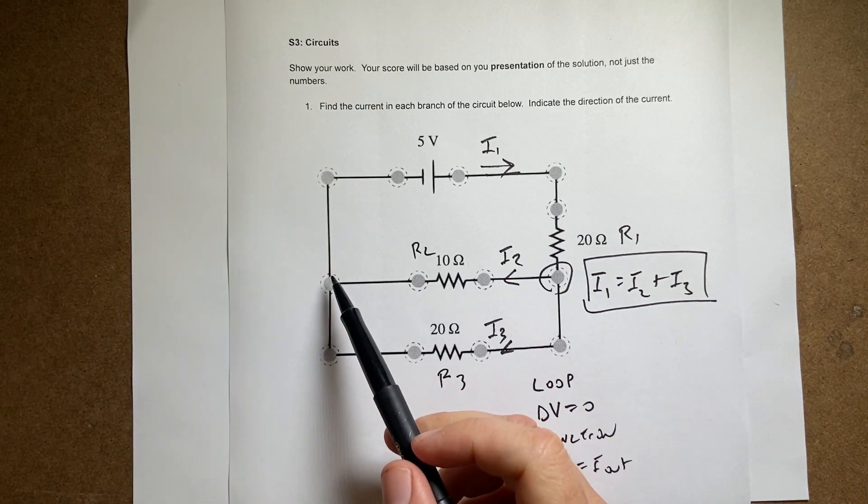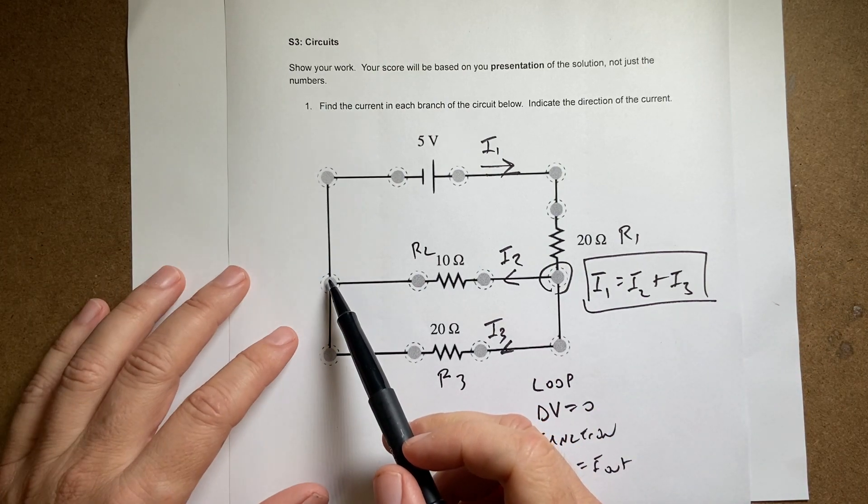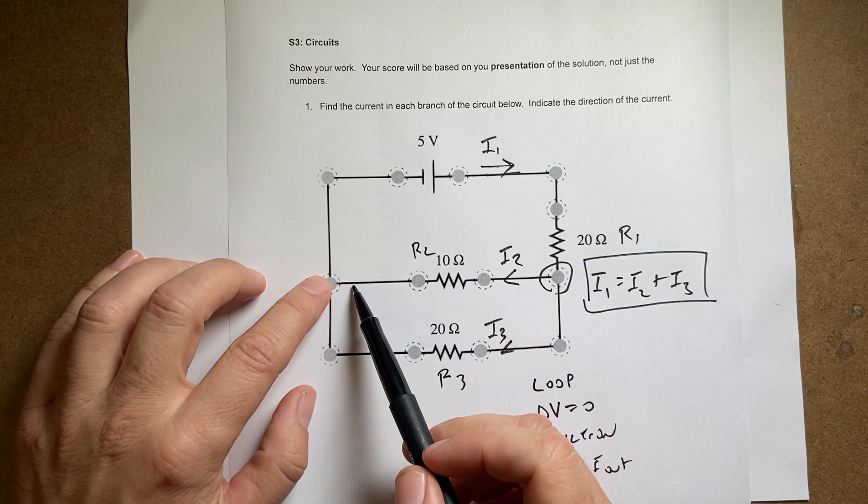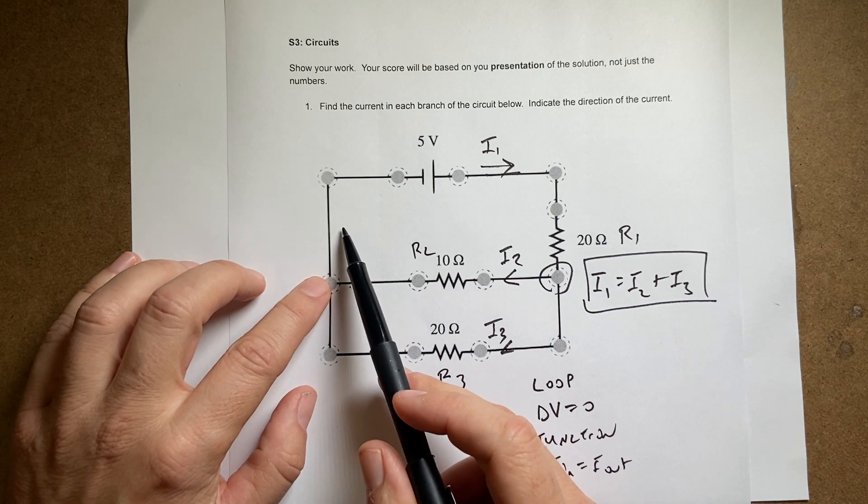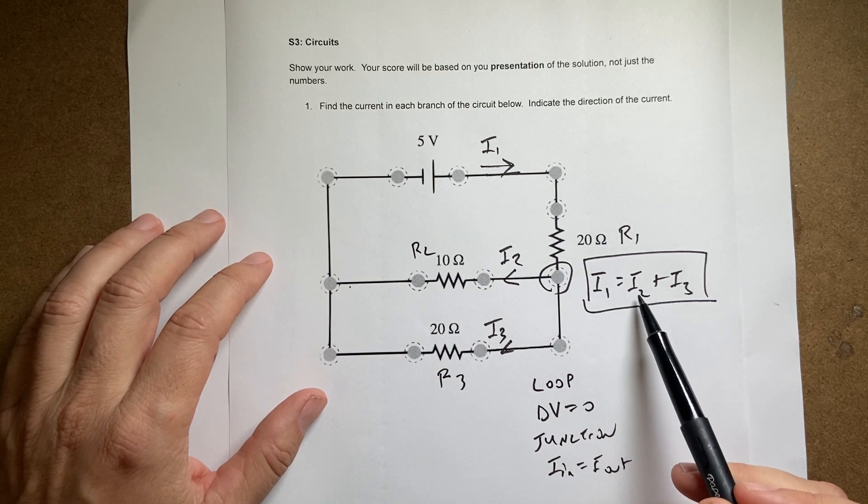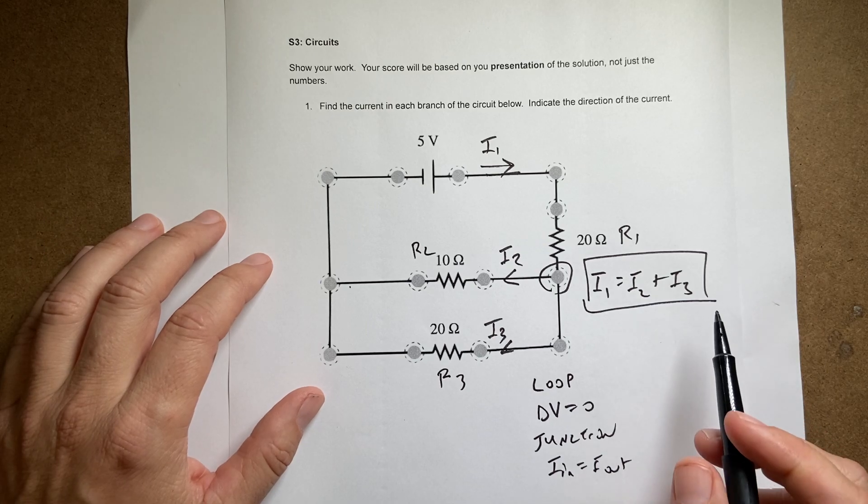Now I can't do this junction over here. It would give me the same thing, right? Because this would just say the current coming in is I2 plus I3 and I1 is coming out which is algebraically the same thing. So now I need two loops.